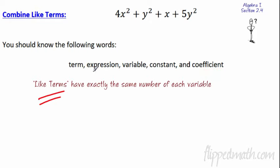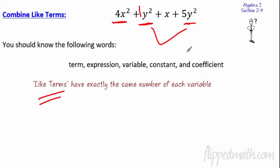Like terms are what you can combine. Like terms have exactly the same number of each variable. Looking at 4X squared: you can't match it with just X because there are two X's there and only one X here. Looking at Y squared — that's really 1Y squared — there is a 5Y squared also present with no X's and the same exponent, so those two are like terms. We could add them to get 6Y squared. Can we put X with X squared? No — they're different dimensions, like a cube versus a piece of paper. Can't add them.